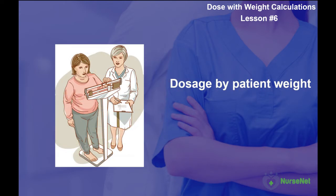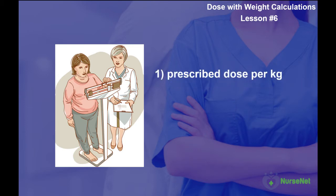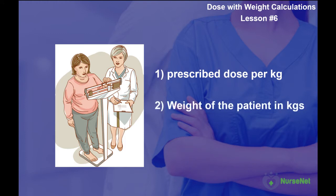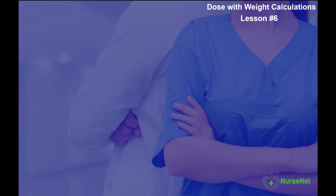Some medications, particularly for children, may be prescribed according to that person's body weight in kilograms. To work out how much of the drug we should give a patient based on their weight, we require two elements of information: the prescribed dose per kilogram, and the weight of the patient in kilograms. The dosage is given in terms of drug concentration to patient's weight, written as milligrams per kg. Our formula is prescribed dose per kilogram multiplied by the total patient weight.